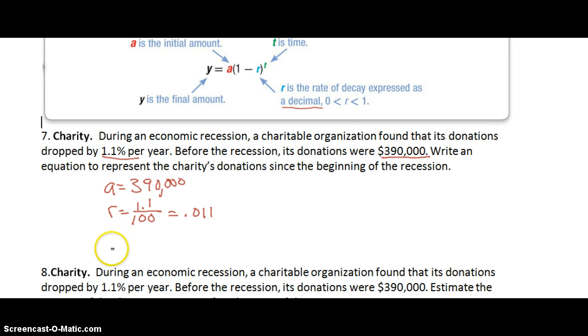And we are looking for... That's all that they give us because they want us to write an equation to represent the charity's donations. So we have Y is going to be the amount that we'll get. Our initial amount times 1 minus the rate 0.011 to T. So we can substitute any number of years in for T to find out how much something will decay.